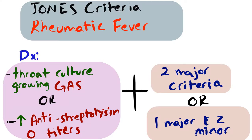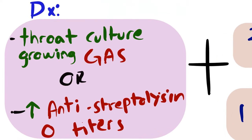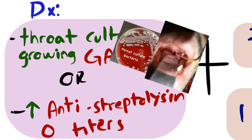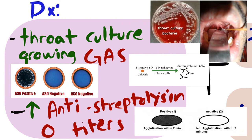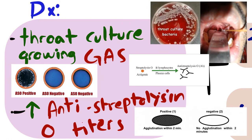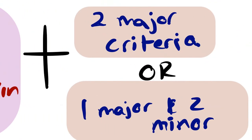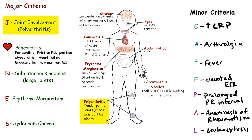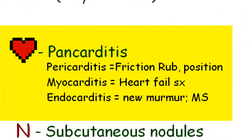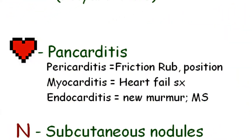The Jones Criteria is specific for rheumatic fever. To make a diagnosis, a throat culture growing GAS or elevated anti-streptolysin O titers must be present, along with two major criteria or one major criterion and two minor criteria. The major criteria are joint involvement such as polyarthritis, and pancarditis, which includes all three layers of the heart. With pericarditis, you'll hear a friction rub - it'll be positional.